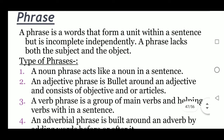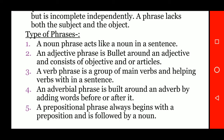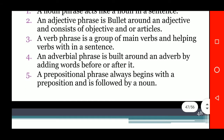Types of phrases: A noun phrase acts like a noun in a sentence. An adjective phrase is built around an adjective and consists of adjectives and/or articles. A verb phrase is a group of main verbs and helping verbs within a sentence. An adverbial phrase is built around an adverb by adding words before or after it. A prepositional phrase always begins with a preposition and is followed by a noun.